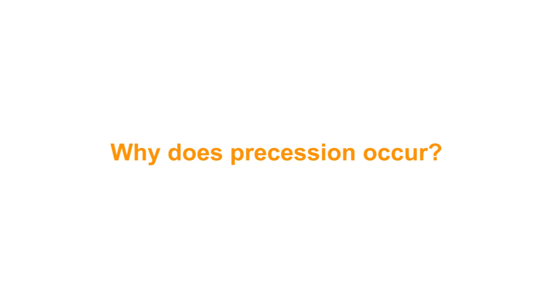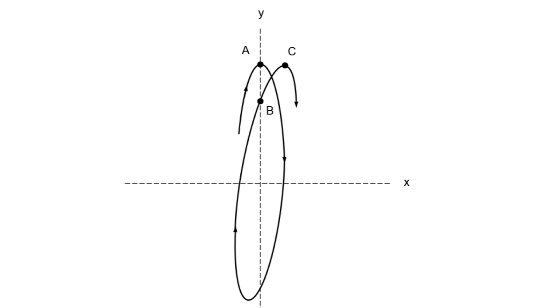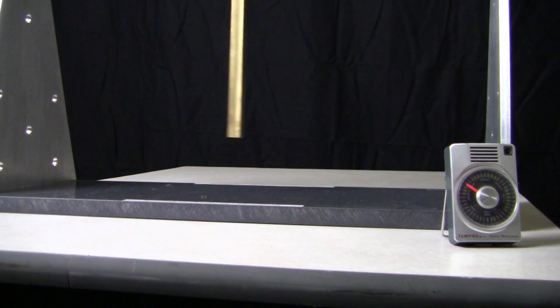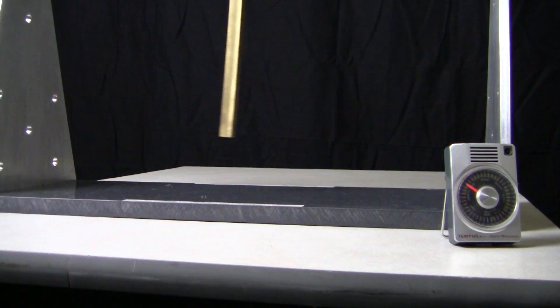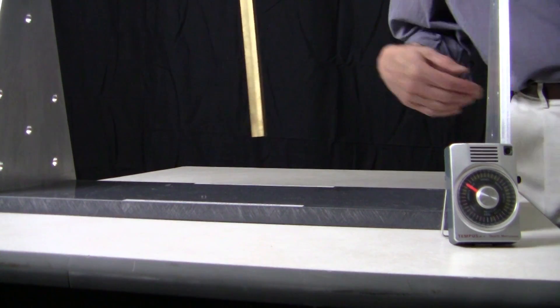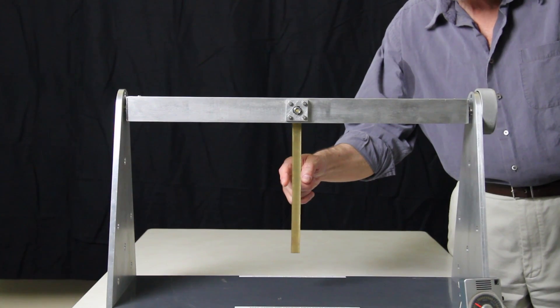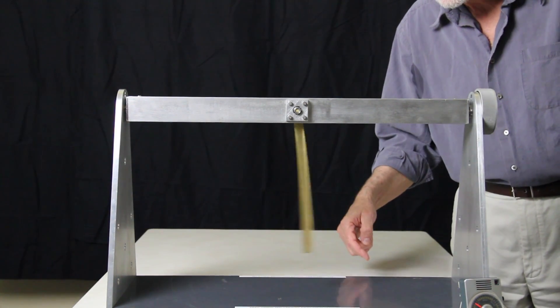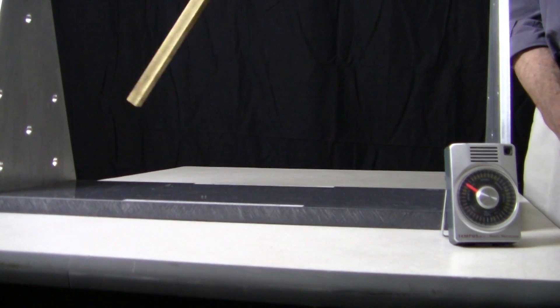Why does the precession occur? This diagram shows a top view of the motion. For no precession, the points A and C are the same. This is what approximately happens at small amplitudes — the orbit closes on itself and the motion repeats. To gain an understanding of the precession, we need to consider a pendulum that oscillates in a plane. Here is an apparatus that will serve this purpose. I have adjusted a metronome so that it has about the same period as small amplitude oscillations of the pendulum, as you can see. If I increase the amplitude a moderate amount, the period remains approximately the same. As I said earlier, this is a result of Hooke's Law.